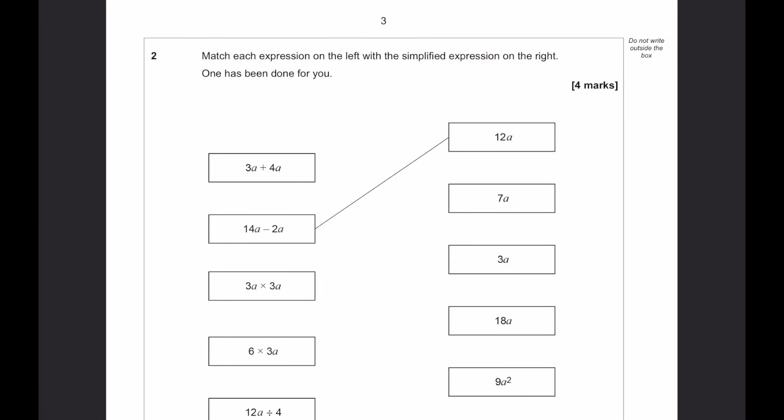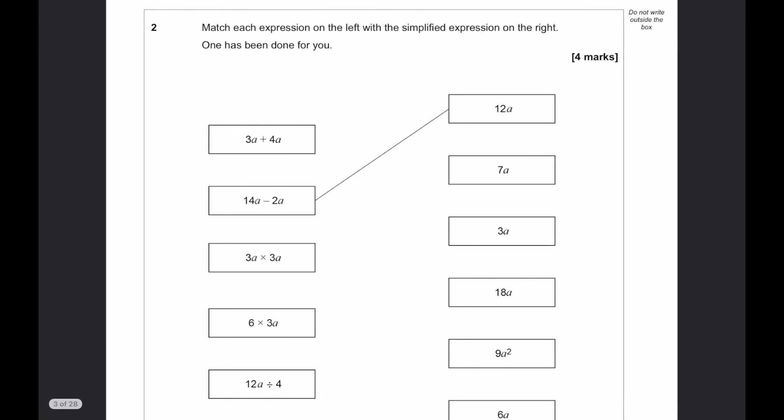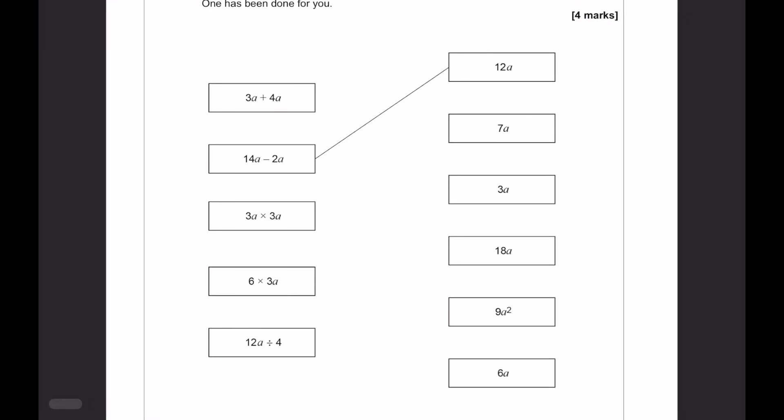Match each expression on the left with the simplified expression on the right. 3a plus 4a is 7a. 3a times 3a is going to be 9a squared. 6 times 3a is going to be 18a. And 12a divided by 4 is 3a.